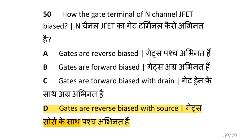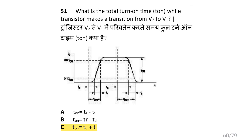How are the gate terminals of an N-channel JFET biased? i.e. the gates are reverse biased with respect to the source.